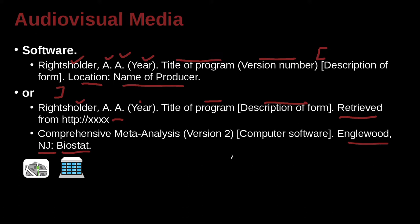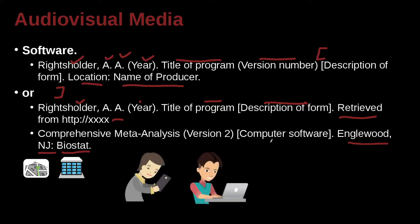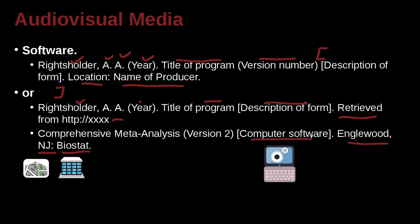How do you find this information? It may be inside the manual, it may be online — something about the company. It is computer software, version 2. Do we have a person's name? In this case, no — we're just going to use the computer program's name. Comprehensive Meta-Analysis is the name of the computer program.